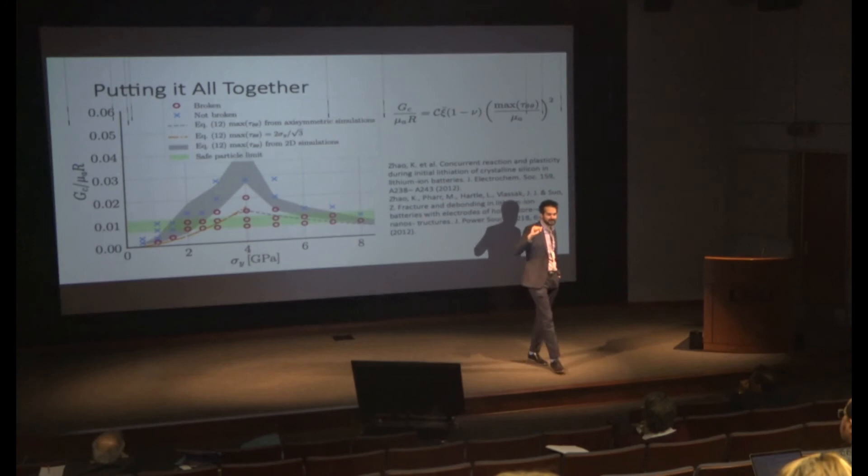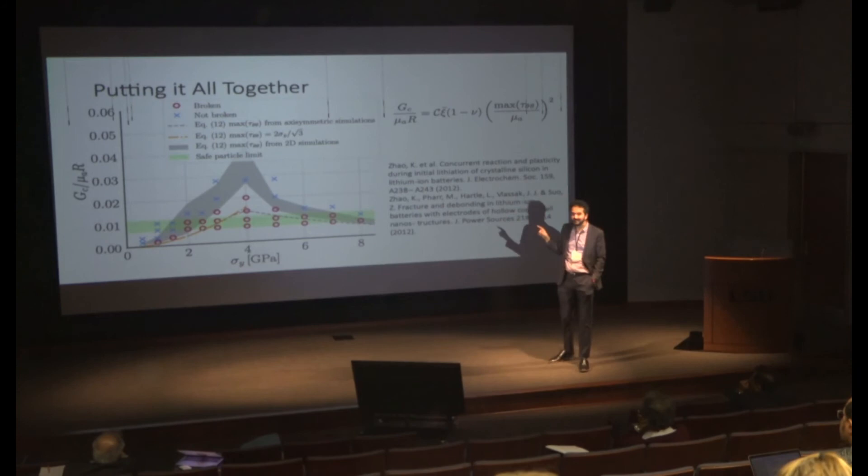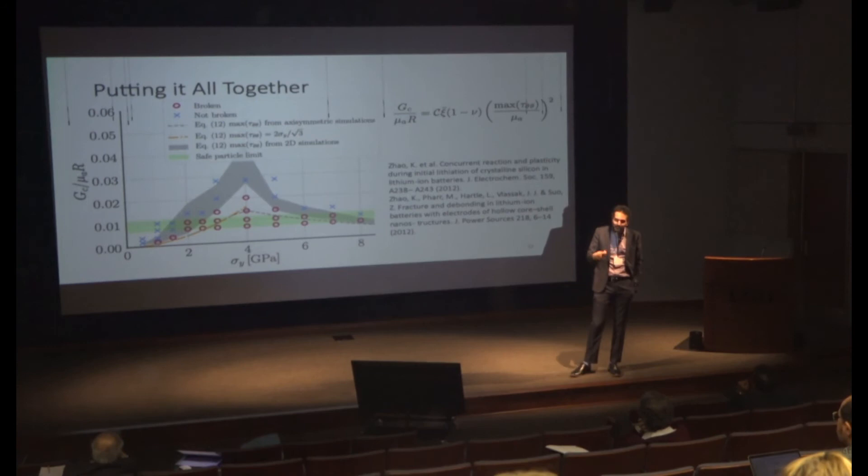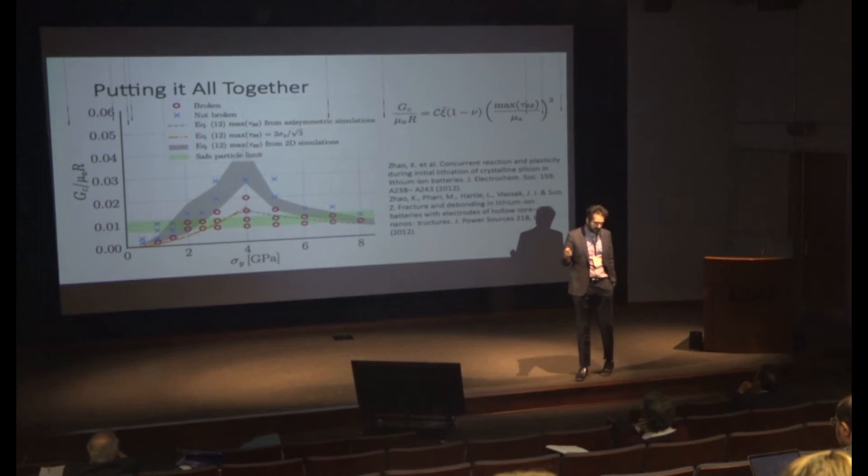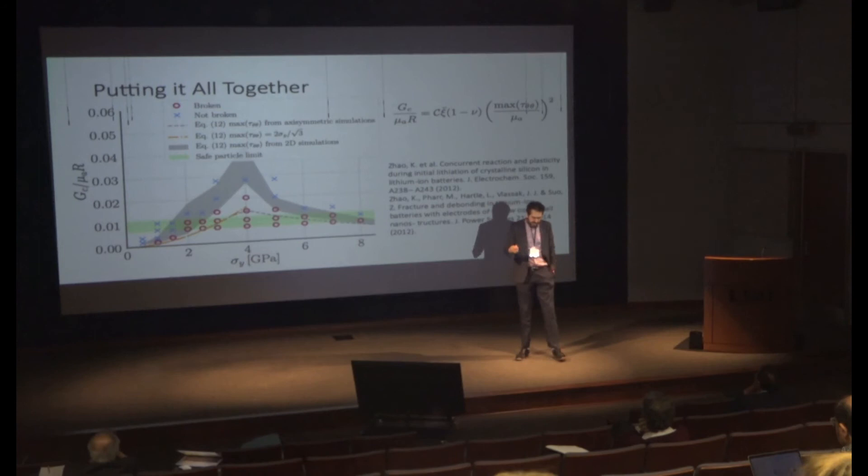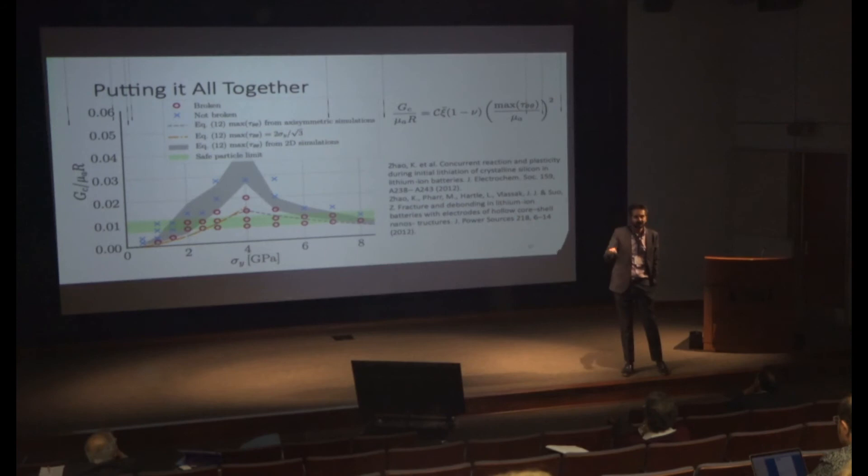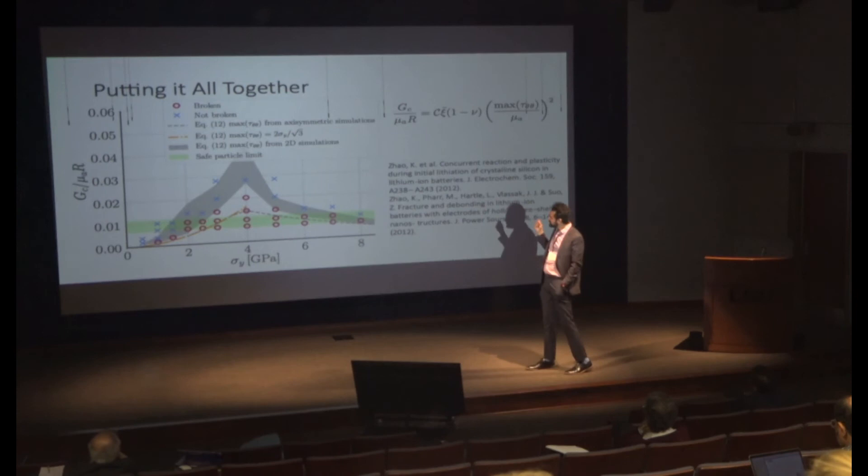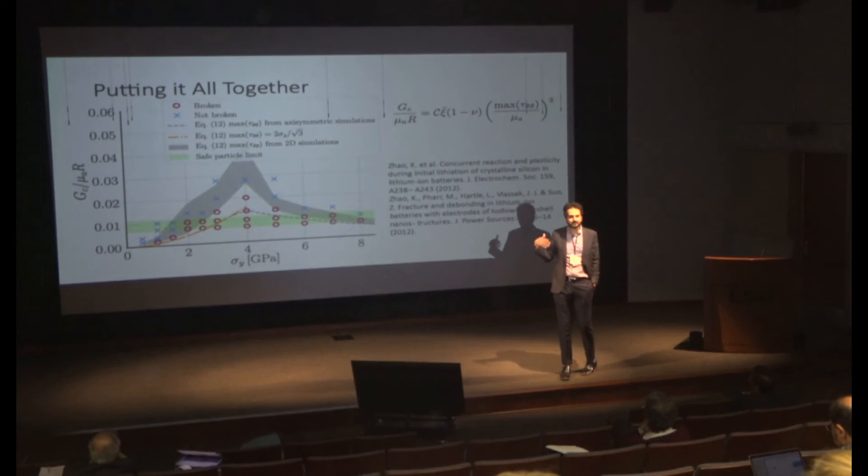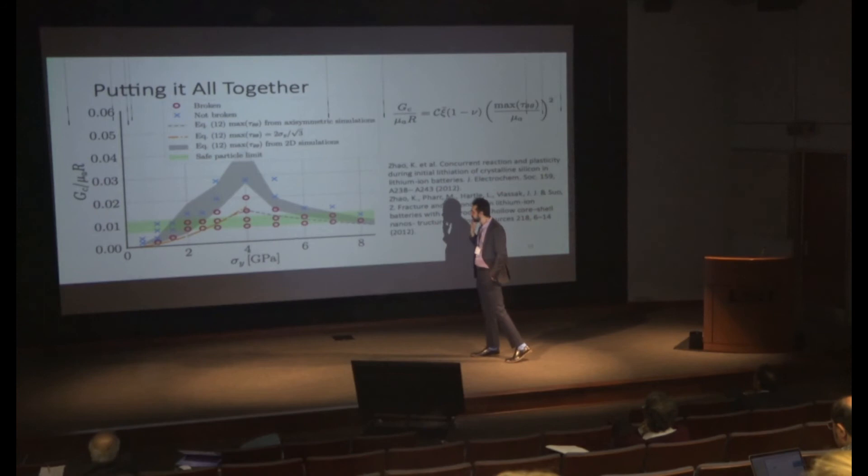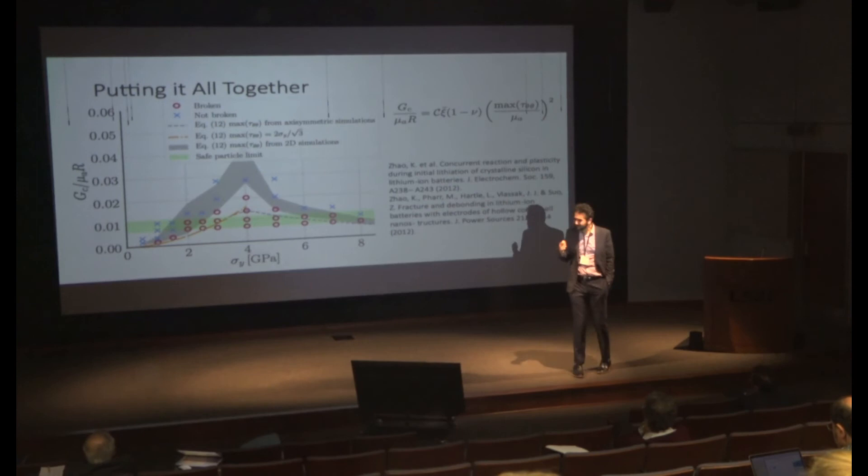For the maximum σθθ that I'm making in 2D simulations without fracture, the dashed line is the axisymmetric case. The orange line is this simpler calculation that Suo, Maitford, and company did—they essentially assume there is no elasticity, it's only a plastic material.